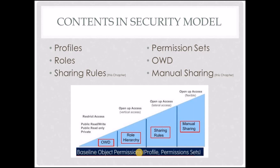Profiles and permission sets determine what a user can see on the object, like the fields, which objects are visible, etc. On top of this, we have the organization-wide default, which can be set to private, public read only, or public read write, where private is the most restrictive. Next, we have the role hierarchy, which allows users at a higher level to view records of those below them. Moving forward, we have sharing rules and manual sharing — sharing rules open up lateral access while manual sharing is flexible.